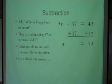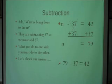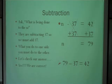Now to check our answer, we use substitution: put 79 in N's place and work the original problem. Is 79 minus 37 equal to 42? Yes, it is — we are correct.